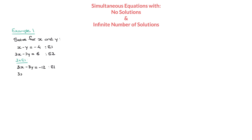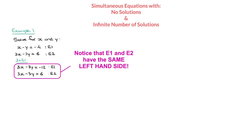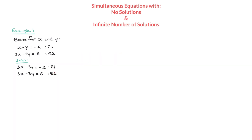The second equation remains unchanged: 3x minus 3y equals 6. To eliminate the y unknown, I need to combine these two equations. Since the 3y in the first equation and the 3y in the second both have the same sign — a minus — I'll subtract one equation from the other. So I'll do e2 minus e1.